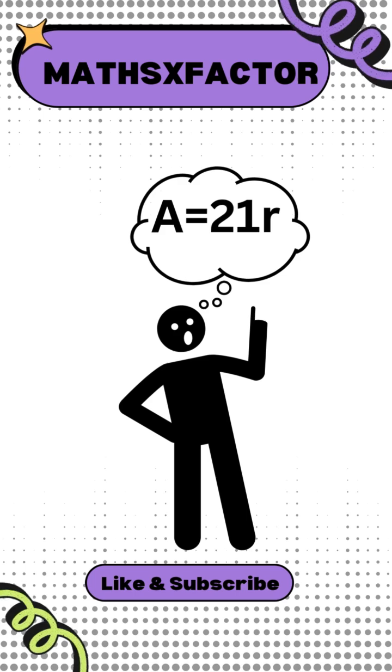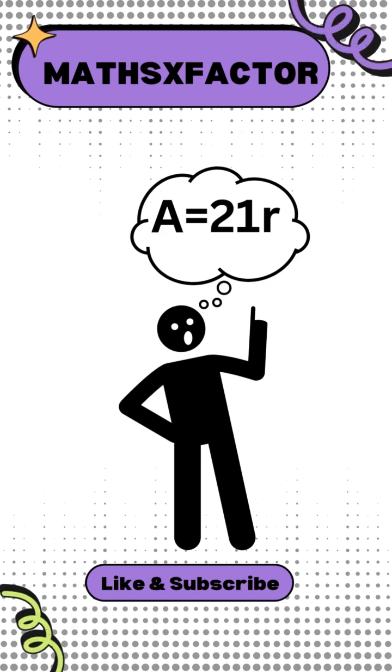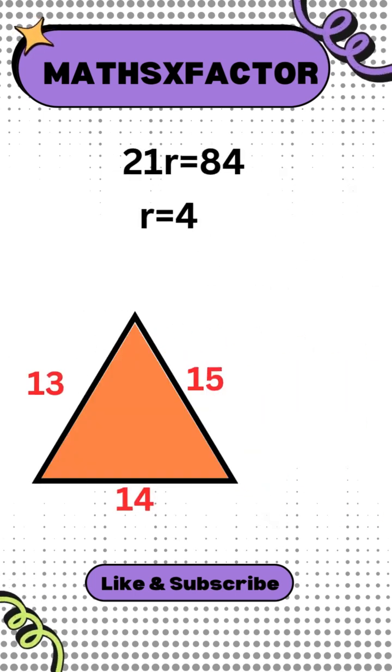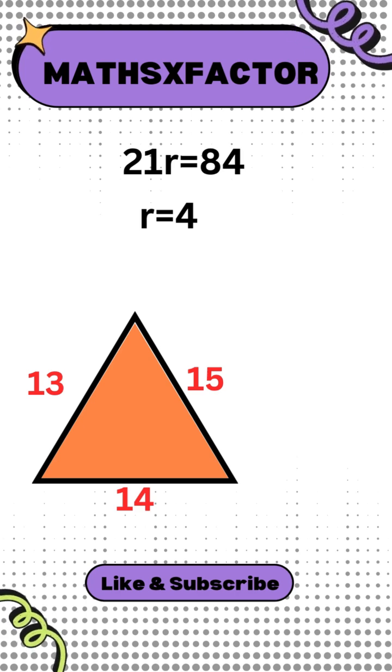Do you remember? We also have the area of this triangle is 21 times R. By comparing the values of area we get R equals 4.